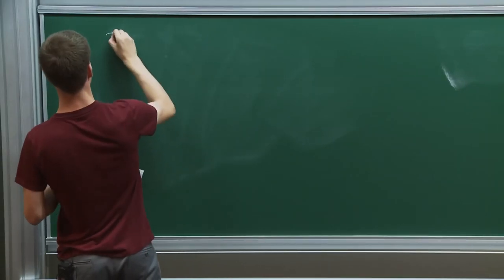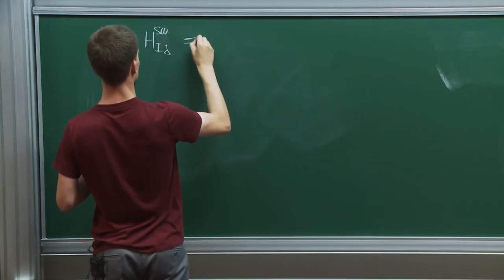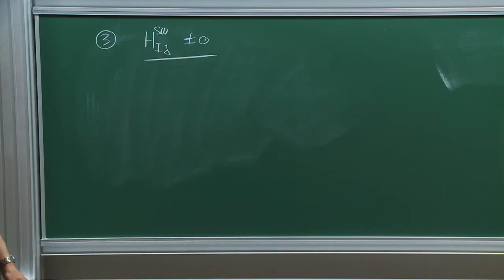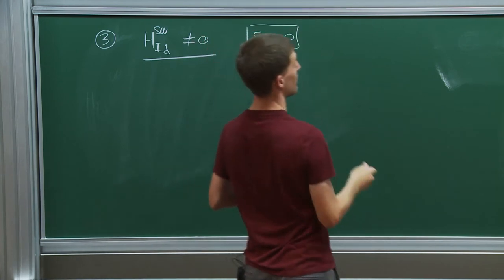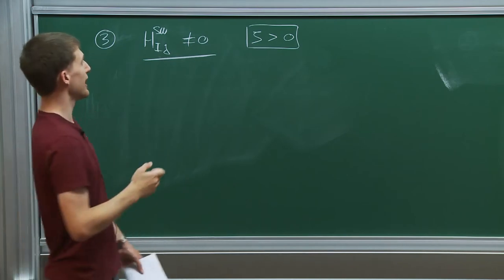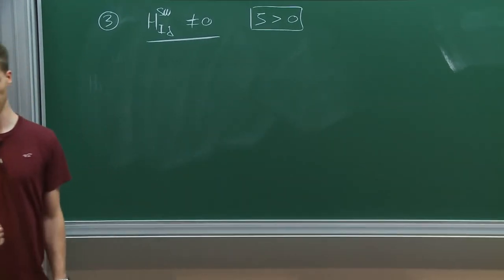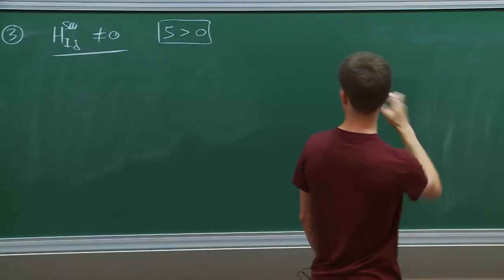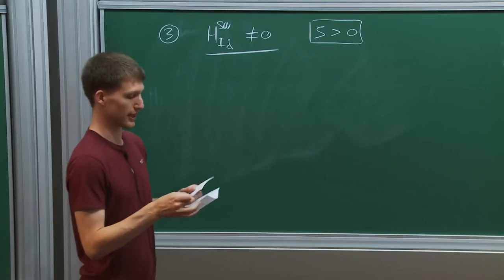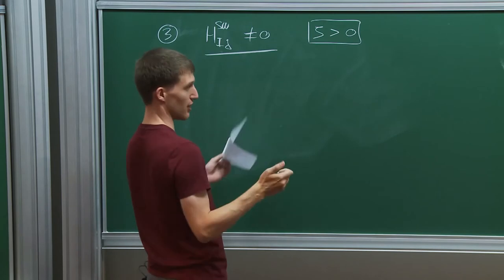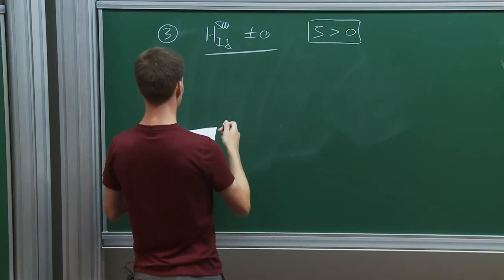The third type of configuration is obtained by relaxing the condition H^SW equals zero. For concreteness choose zeta positive, so we are giving VEVs to the hypermultiplet scalars q and not to q-tilde. When you do this, just like this morning when Francesco obtained vortex equations, we obtain equations that in these particular cases are not analytically solvable. But we can gain insight by studying limits: close to the North Pole, close to the South Pole, and far away.